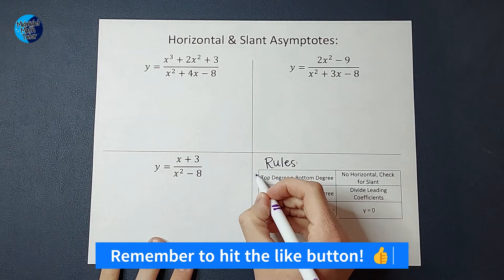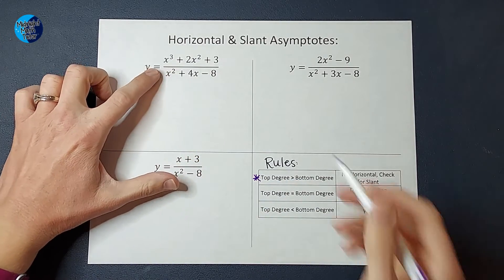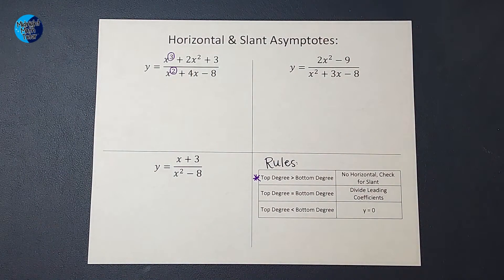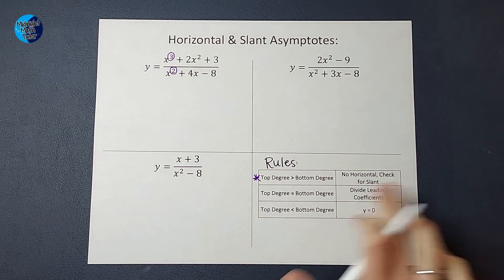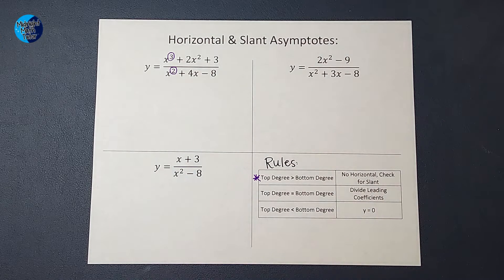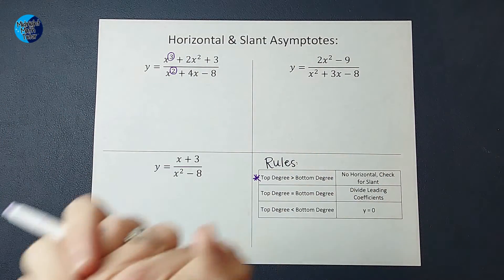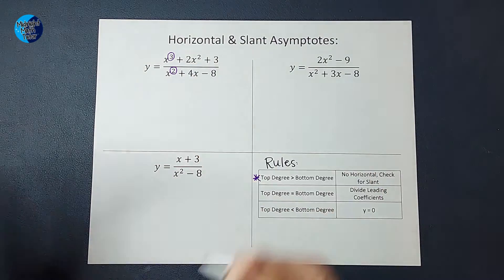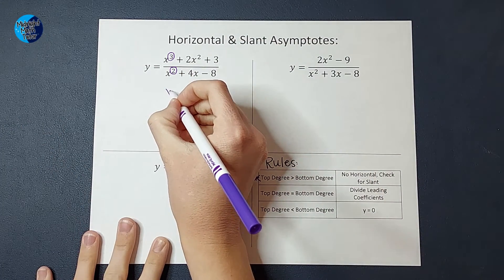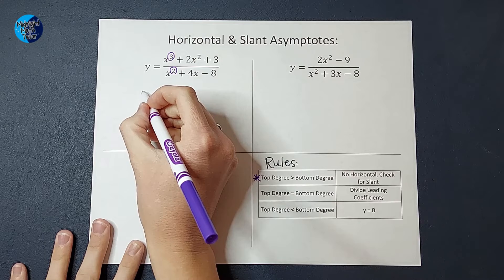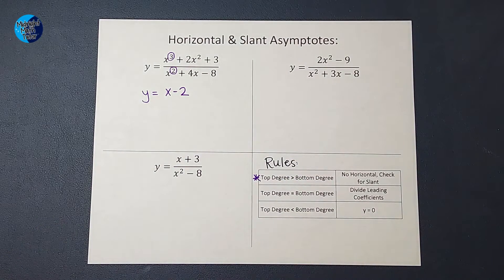This first rule: you've been told if the top degree is bigger than the bottom degree — my biggest exponent on top is bigger than the bottom — go ahead and do long division and that will give you your slant asymptote. When I do long division here — if you need a review on that, I'll link a video in the corner — I end up with x minus 2. You leave the remainder off, so my slant asymptote here is y equals x minus 2.